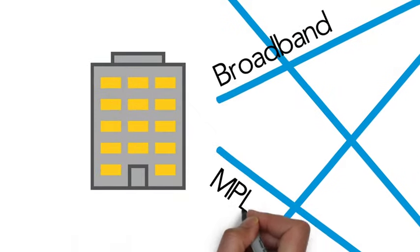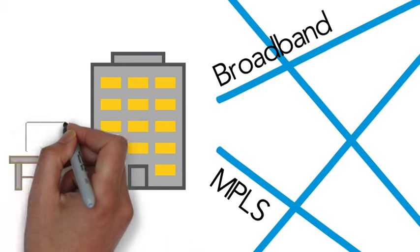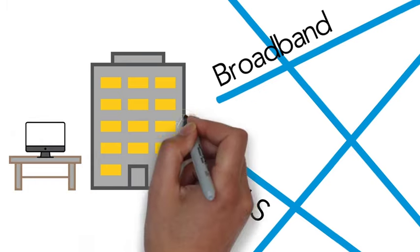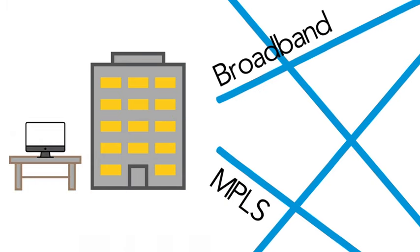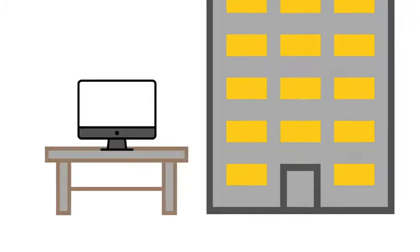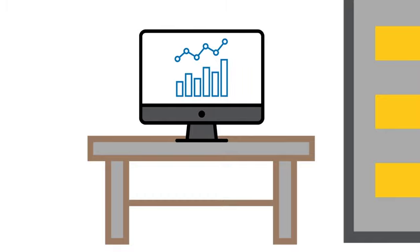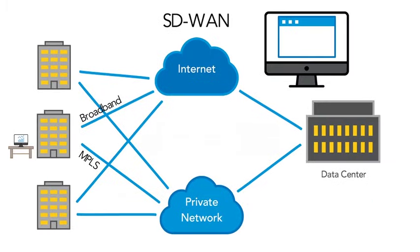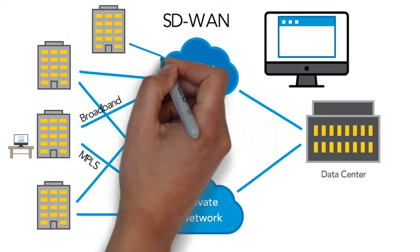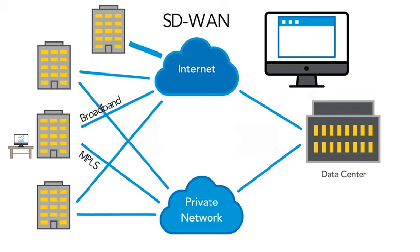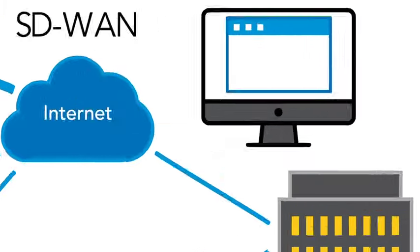So why does SD-WAN matter? Achieve higher network performance and dramatically improve availability and application user experience by intelligently leveraging multiple paths. Gain visibility and active monitoring for the network and the applications running on it. The network becomes a single entity controlled from a single point, increasing agility, quickly deploying new sites, services, or just more bandwidth with no truck rolls or on-site expertise.